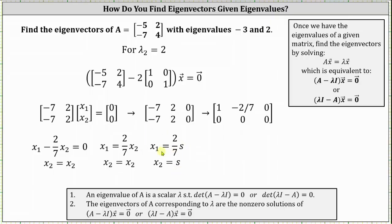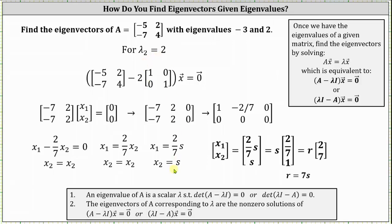This indicates vector x, representing all the eigenvectors corresponding to lambda equals two, are the vectors in the form of two-sevenths s, s, or s times the vector two-sevenths, one. If we want to clear the fraction of two-sevenths we can let r equal seven s, which gives us r times the vector two, seven. We don't include the zero vector as an eigenvector, so s and r can't equal zero.